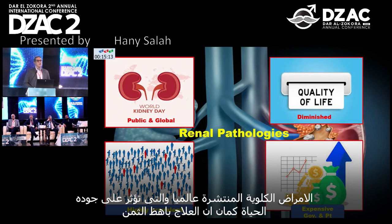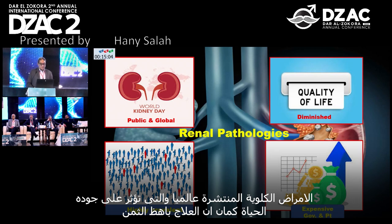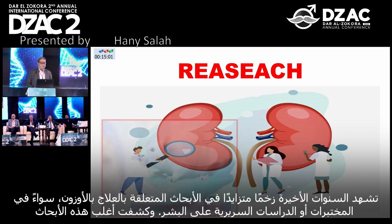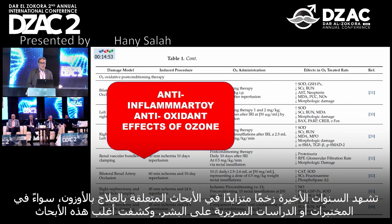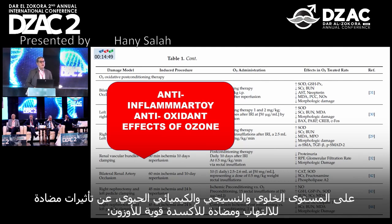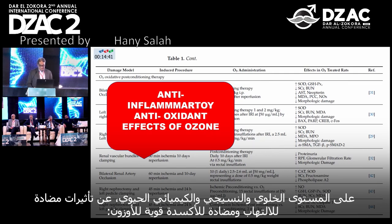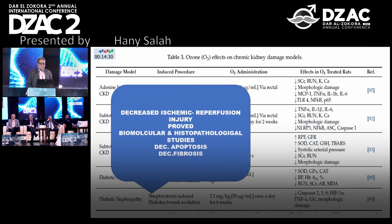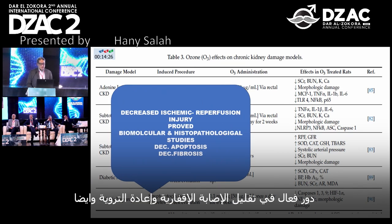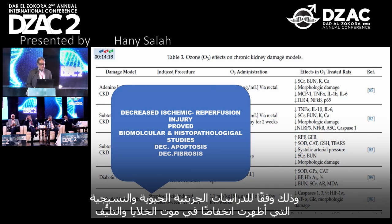For renal diseases, which are a global public health issue affecting quality of life and costly for patients and governments, there is high prevalence and a lot of research — both experimental and human studies. Most of these studies showed, at experimental, laboratory, and histopathological levels, the anti-inflammatory and antioxidant effect of ozone, especially the vasodilator effect through increased nitric oxide and HO-producing enzymes, and the role of ozone therapy in decreasing ischemic reperfusion injury, as proved by biomolecular and histopathological studies showing decreased apoptosis and fibrosis.